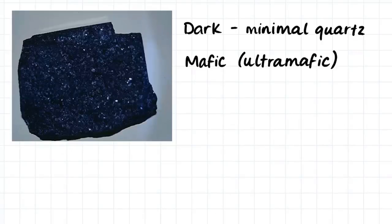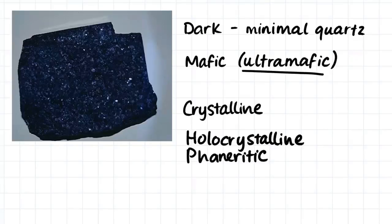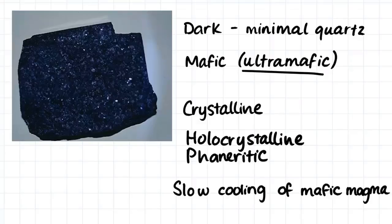Here we have another very dark igneous rock with minimal quartz. I would say that it is mafic to ultramafic, probably more ultramafic. It is a crystalline rock and I would say that it is holocrystalline and has a phaneritic texture. It is formed from the slow cooling of a mafic magma. This sample is similar to the sample just before, as it is formed from a mafic magma, however this one is intrusive while the other was extrusive. This rock we would call gabbro.